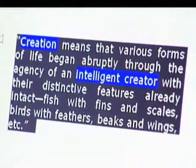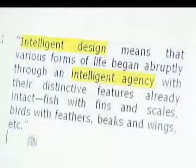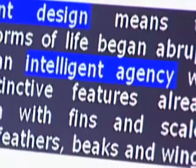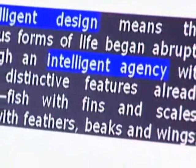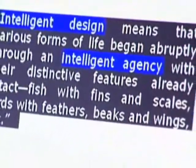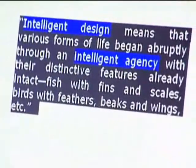Fish with fins and scales, birds with feathers, beaks and wings, etc. The second version says: 'intelligent design means that various forms of life began abruptly through an intelligent agency, with their distinctive features already intact — fish with fins and scales, birds with feathers, beaks and wings, etc.' But here's the kicker.